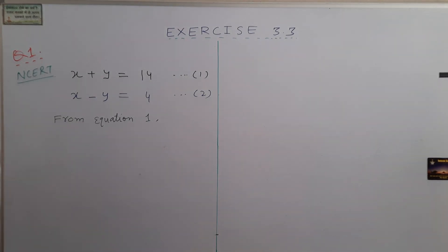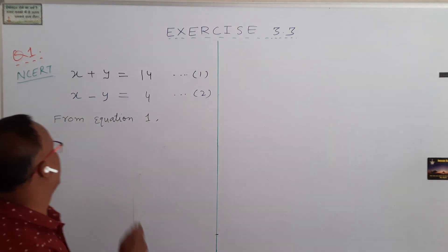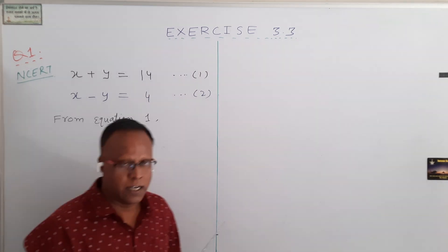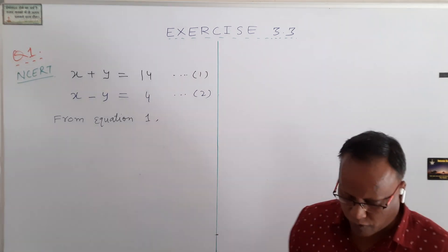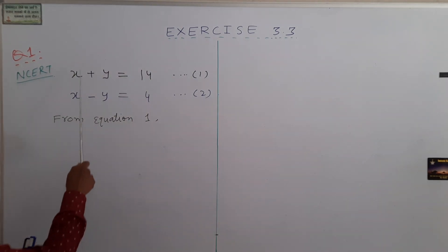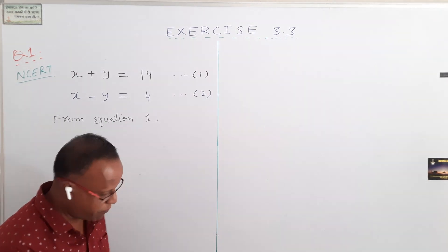Question 1 NCERT. The given equations are x plus y equal to 14 and x minus y equal to 4. So our aim is to solve these two pair of linear equations with the help of substitution method.